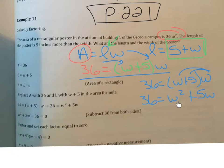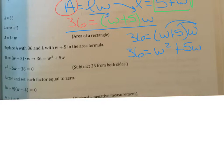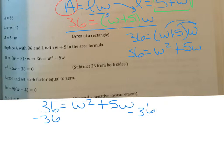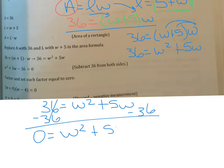Recognize this as a quadratic equation with the squared term. To solve a quadratic equation by factoring, we need the equation to equal zero, and right now it does not. So we subtract 36 from both sides. That 36 is not like terms with the 5w term since one has a w and one doesn't — this is a standard trinomial.